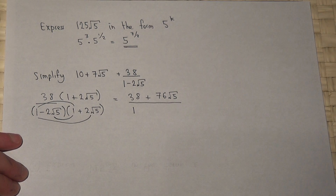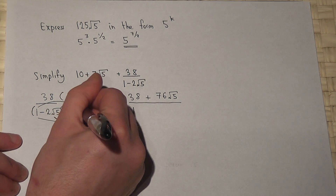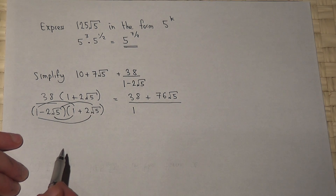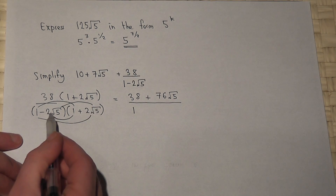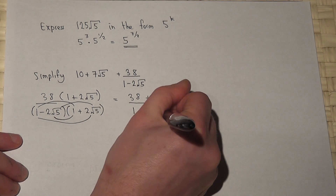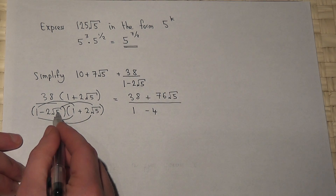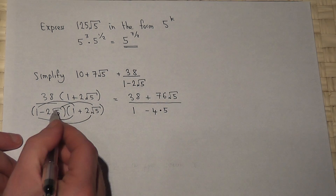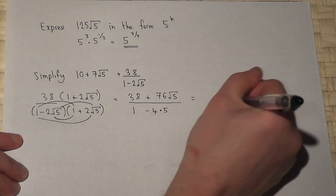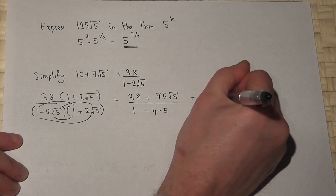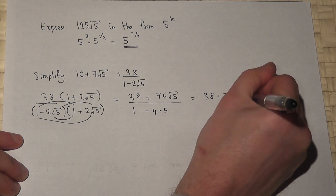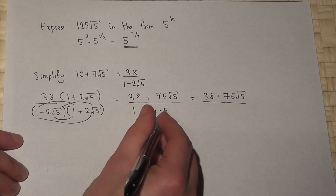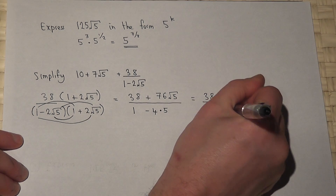So those middle terms vanish. However, there's also the fourth term: minus 2 root 5 times plus 2 root 5. Minus 2 times 2 is minus 4, but root 5 times root 5 is 5. So it becomes minus 4 times 5, which is minus 20. This gives us 38 plus 76 root 5 all over 1 take away 20, which is minus 19.